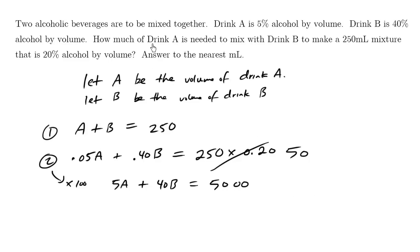And the question here is how much of drink A is needed to mix with drink B? So we need to solve A. This question is saying solve A. So to solve for A, I want to eliminate the B's. So when I look at this first equation here, the B is 1, and this here is a 40B. I want to make them the same so I can eliminate them using the elimination method.